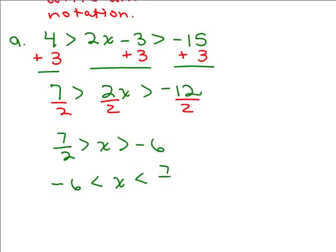Now you could write 7 halves or 3 and a half, that doesn't matter. Because to put it in interval notation, you always have to have the smallest number on the left. So now x is between these. They're both less than, so I'm going to use parentheses, negative 6 to 7 halves.